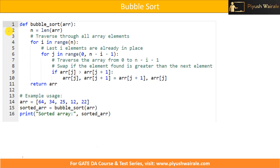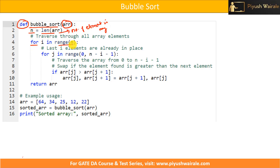This Python code defines a function called bubble_sort that takes an array as input. First, n equals the length of the array — that is, the number of elements. For i in range n, and for j in range 0 to n minus i minus 1, we have an outer for loop and an inner for loop.